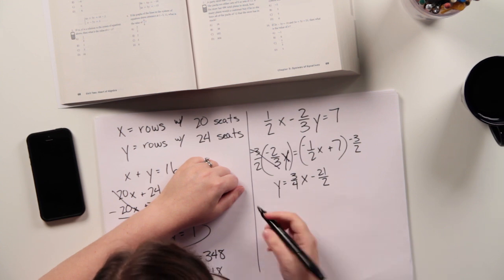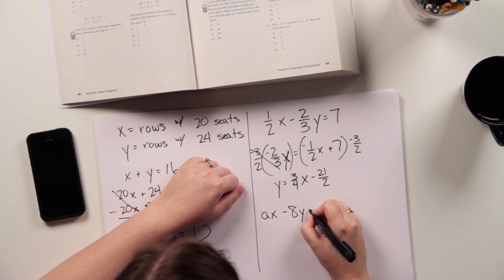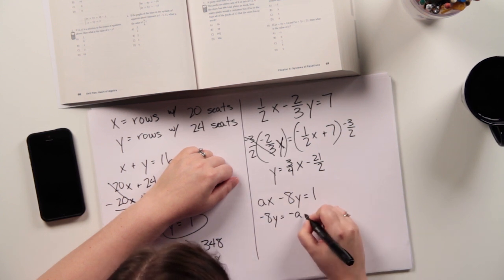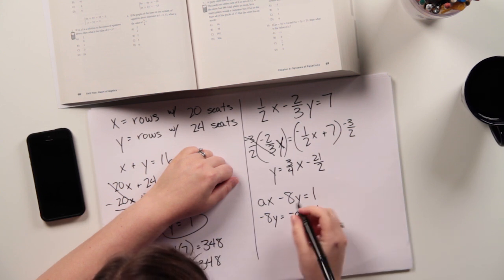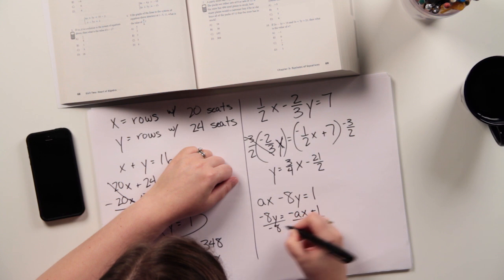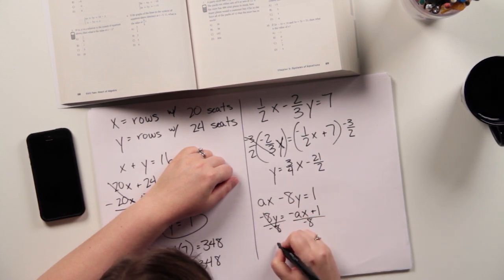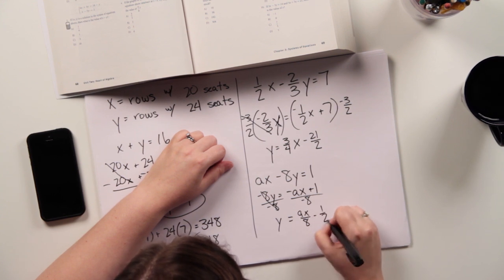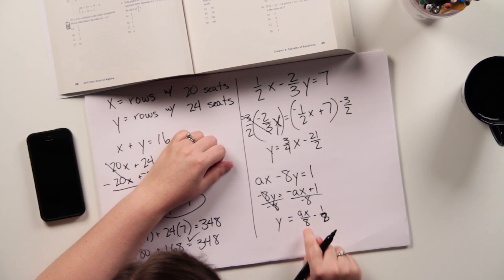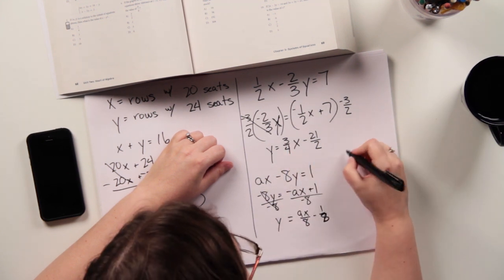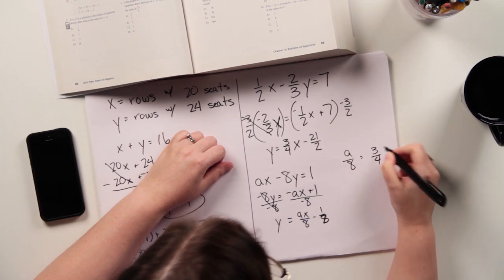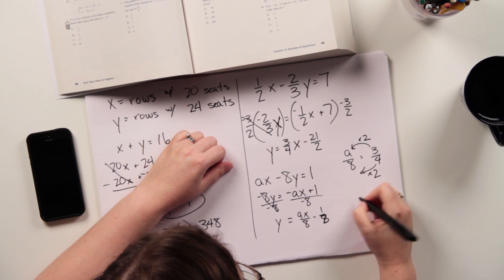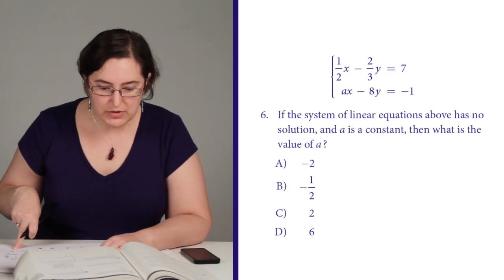So let's look at the other one. ax minus 8y equals 1. So then, again moving things over, negative 8y equals negative ax plus 1. And then I need to divide everything by negative 8. So this gives me y equals ax over 8 minus 1 eighth, which again, don't care so much about that, but this a over 8 has to be equal to 3 fourths. So if I set these equal to each other, then I know, OK, this is multiplied by 2. So I just do the same thing on top and get a equals 6, which is answer choice D.